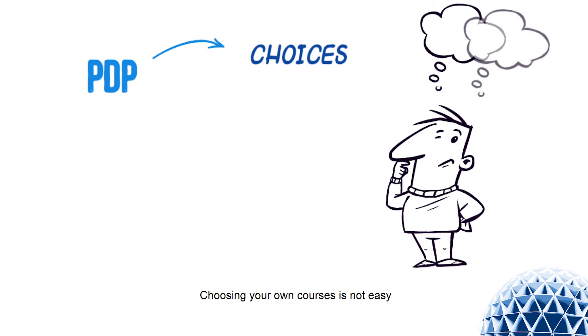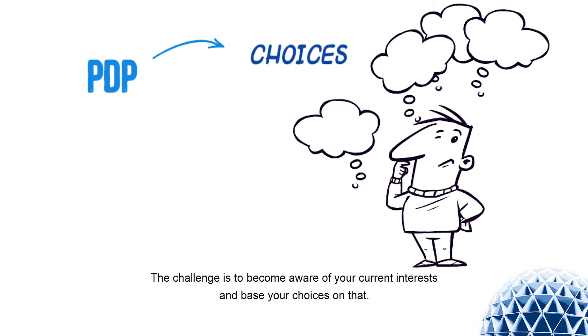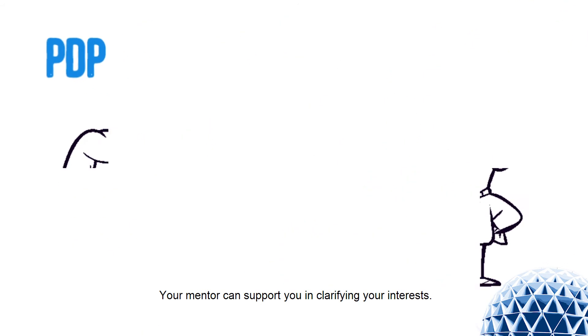Choosing your own courses is not easy, especially because you're not always aware of what choices there are to take and you might not know exactly what you want. The challenge is to become aware of your current interest and base your choices on that. Your mentor can support you in clarifying your interest.